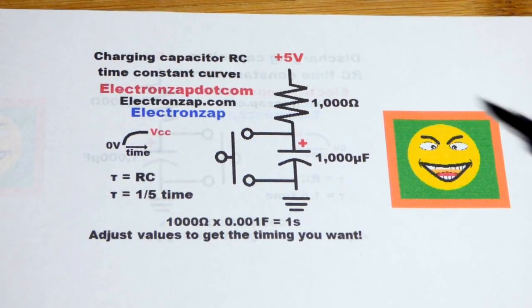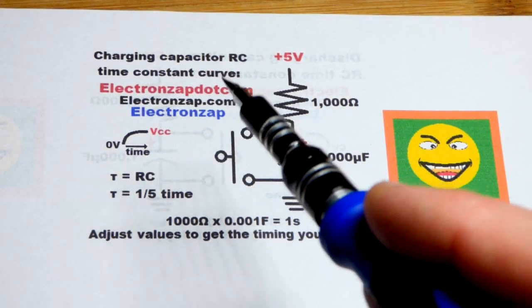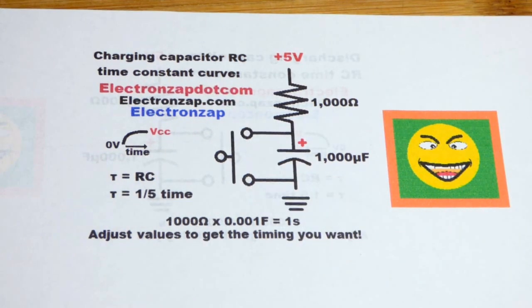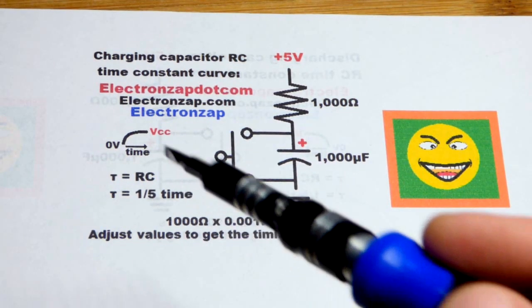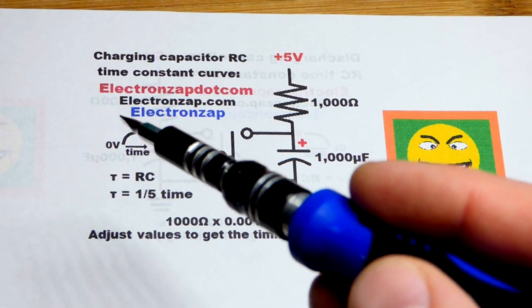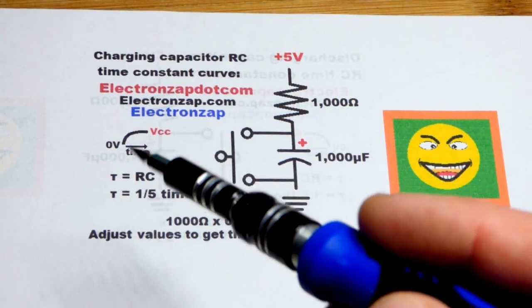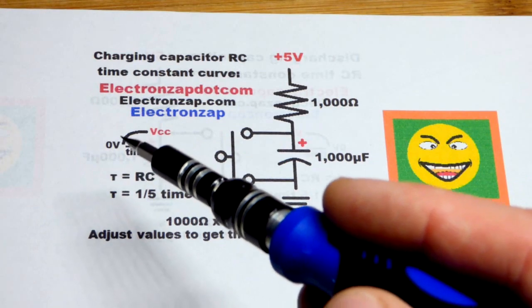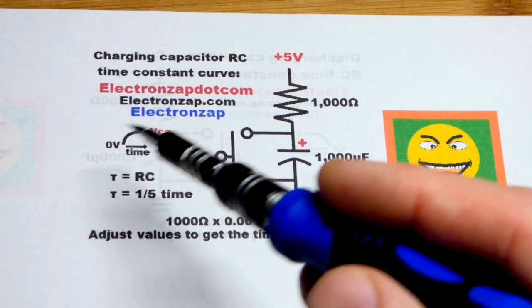So now in this video we're going to look at the RC time constant of a charging capacitor. It's just like the discharging capacitor from the last video, except the discharging capacitor voltage went down in that curve. For the charging capacitor, the voltage goes up over time as far as the curve is concerned.